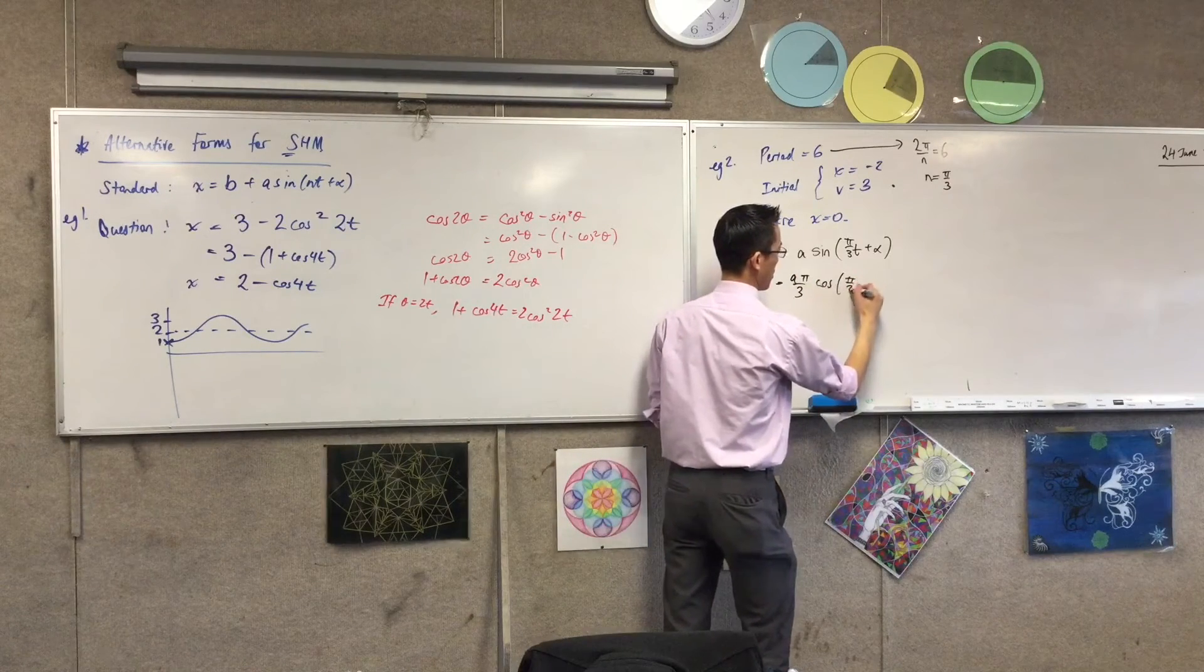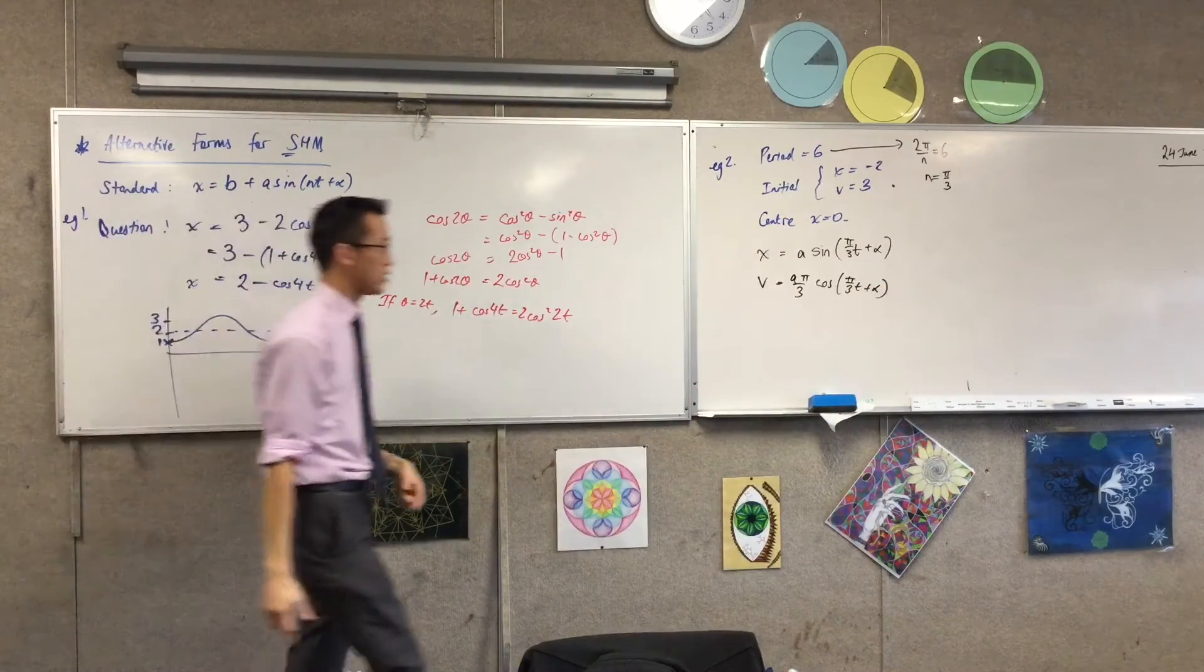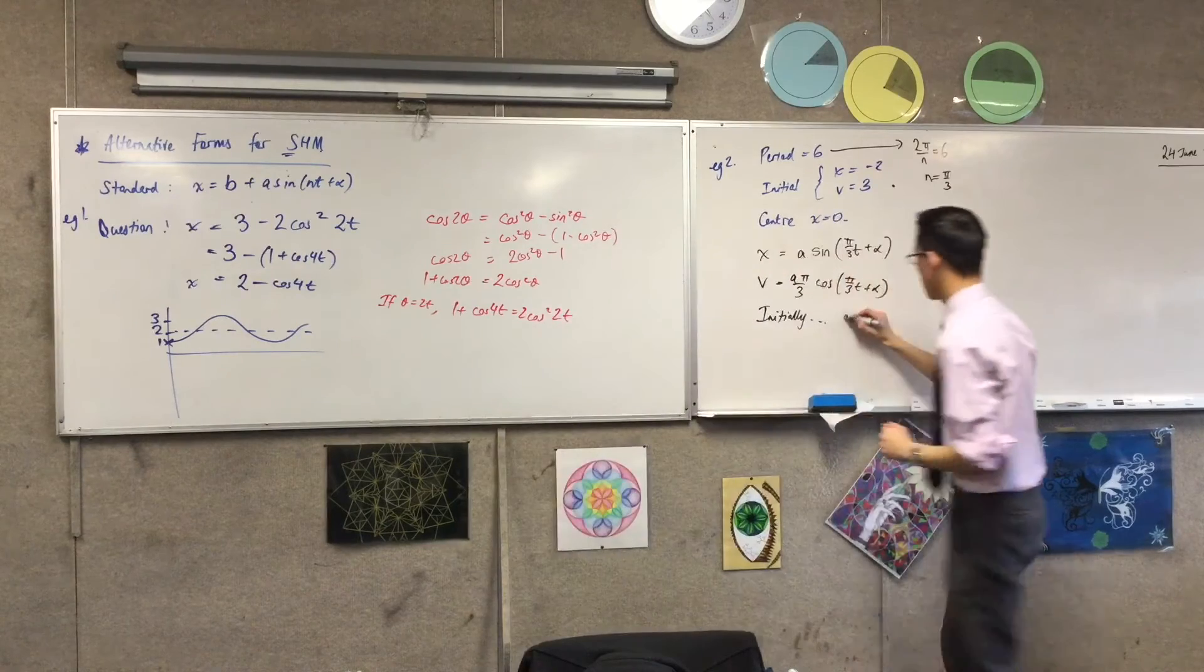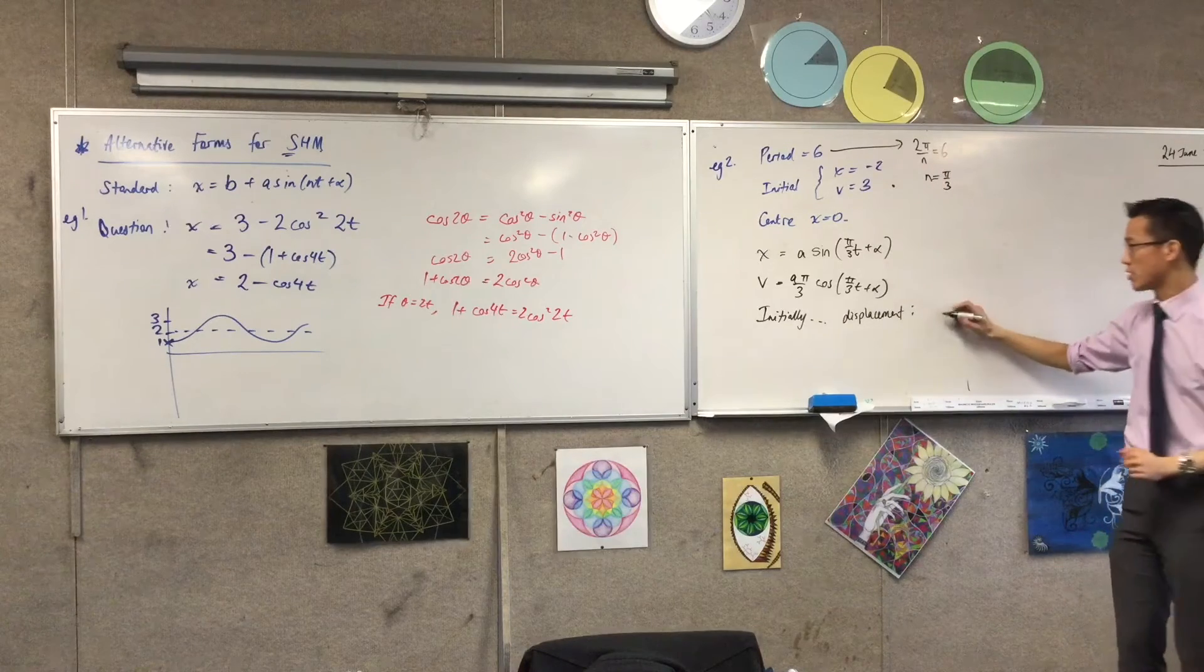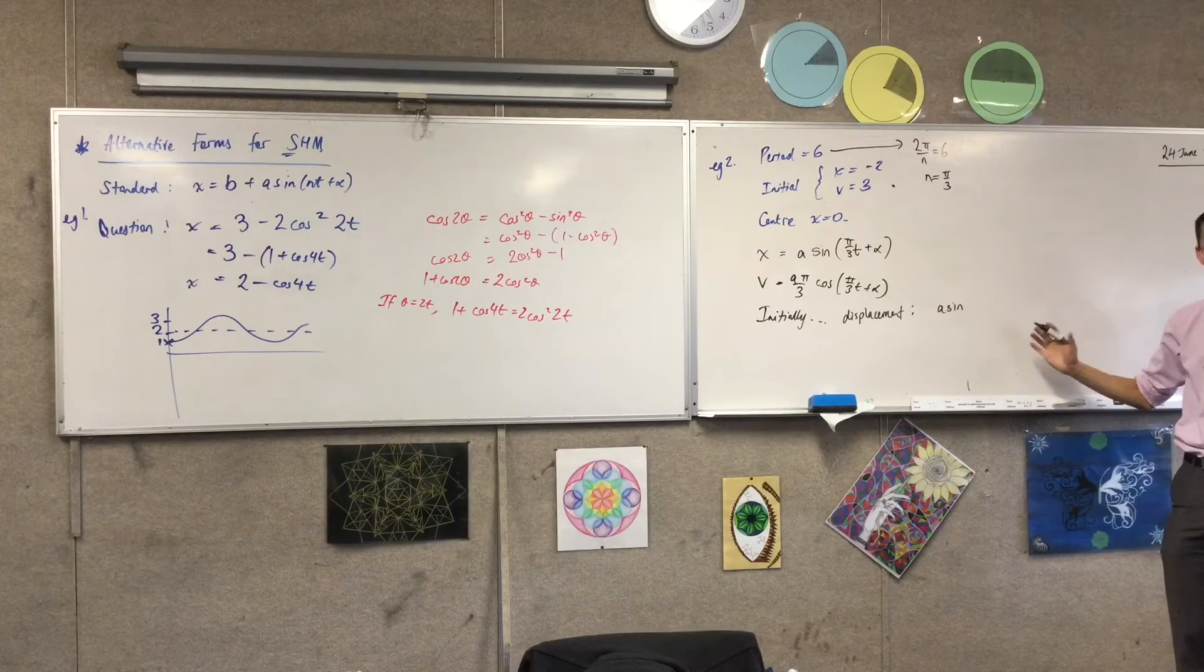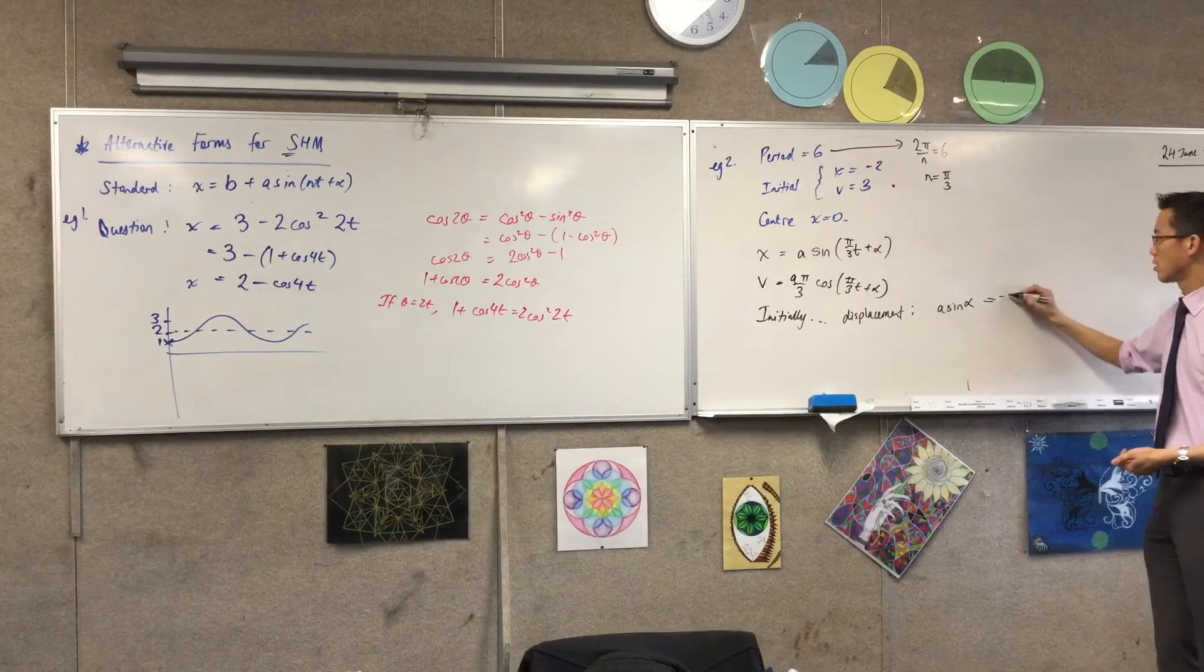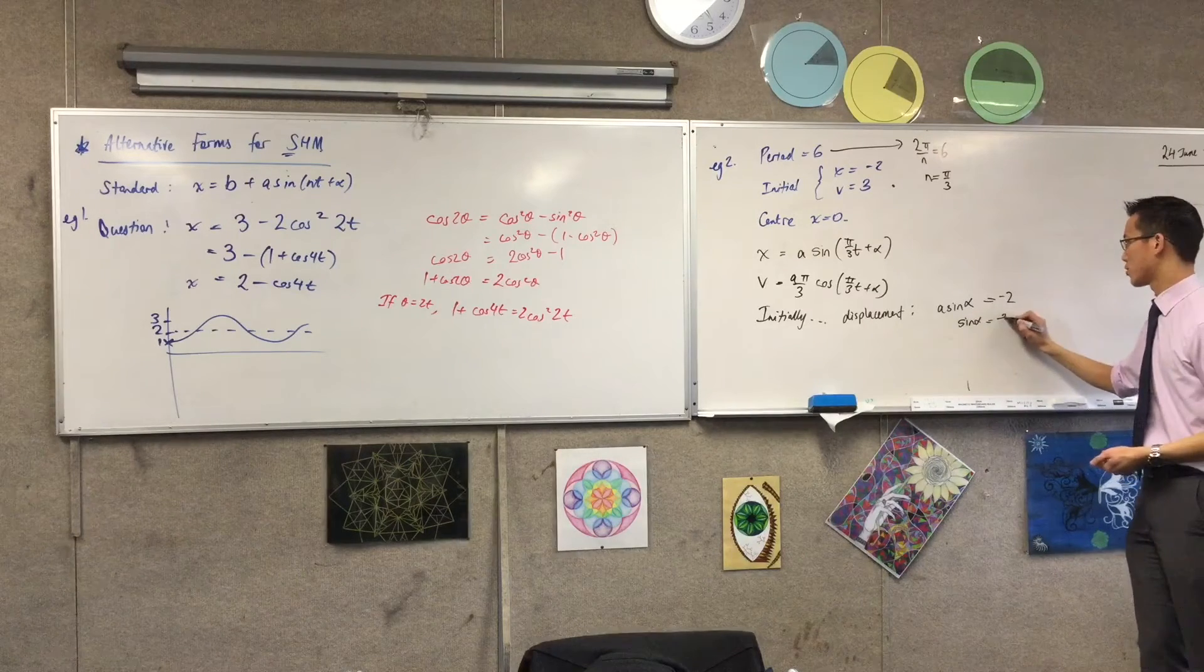What am I going to get? Simple chain rule. So then I'm going to use my initial conditions, right? So I'm going to say initially, first let's do displacement. So the displacement equation tells me, here's the displacement equation. So I've got A sine of what? This is initial, right? Initially. Initially t equals 0, so I've got 0 plus alpha. So A sine alpha equals minus 2. Good.